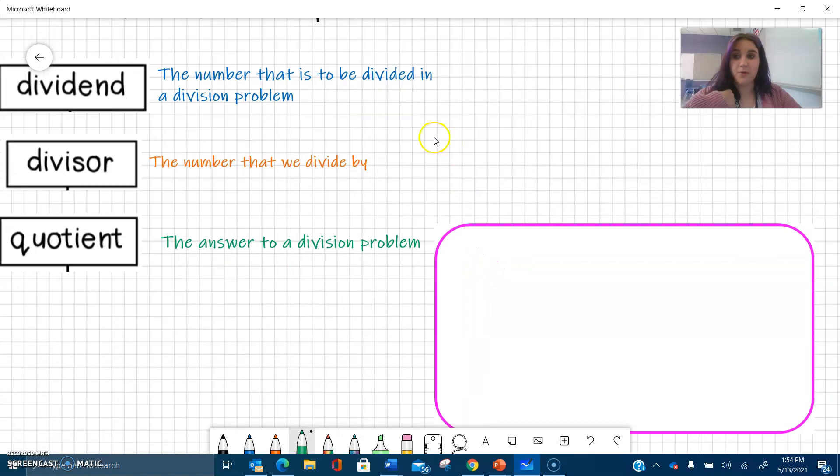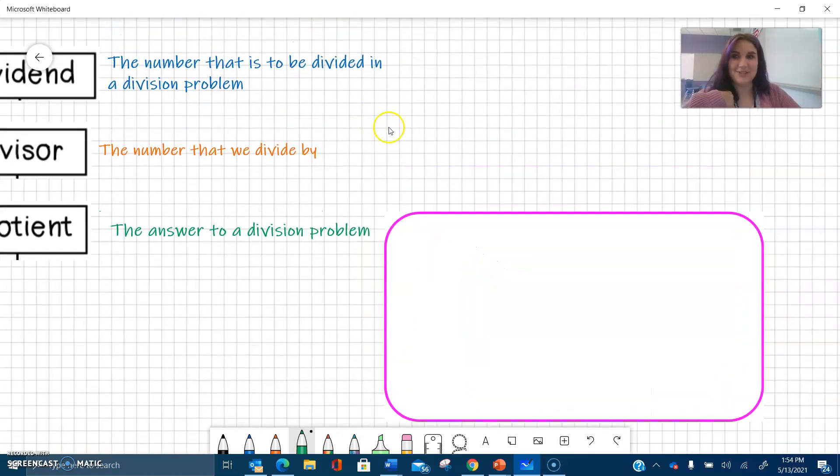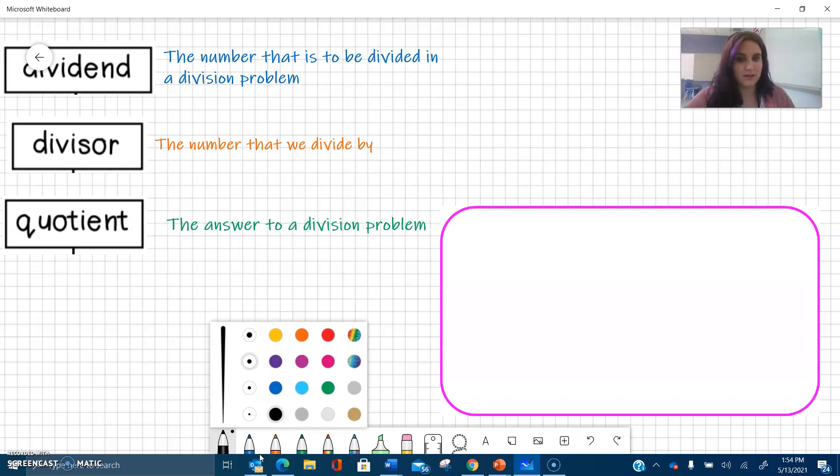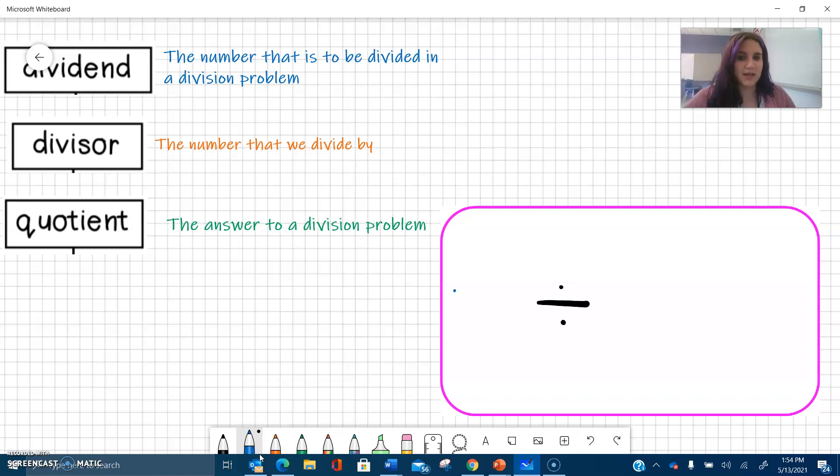Now one way that we see division problems written is using the division symbol. So with using the division symbol, which looks like this, we have the dividend divided by the divisor. So let's say we have 20 is the dividend, and we divide that into four groups. So 20 divided by 4 equals the quotient 5.